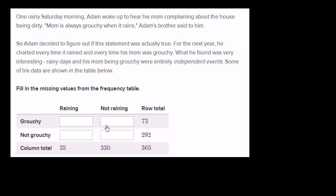So the first thing we ask is, how do we figure this out? We have these four boxes here. It's not clear that we have enough information to fill it out just with this table. But we have to remember what they told us. They told us that his mom being grouchy and it raining were entirely independent events.